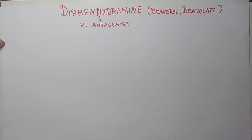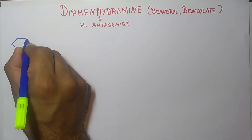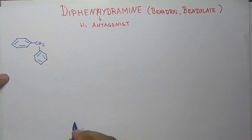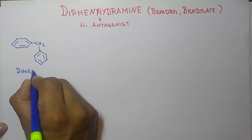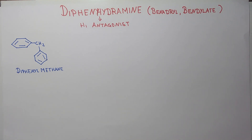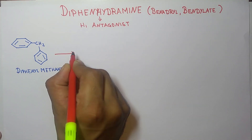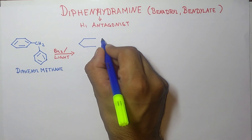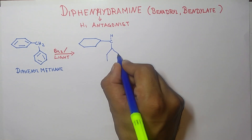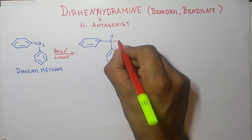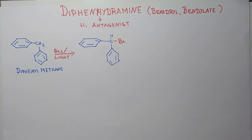First of all, take diphenylmethane. In the presence of light, there will be the addition of bromine, and in the next structure we get the addition of bromine.